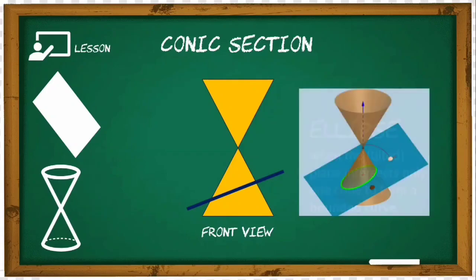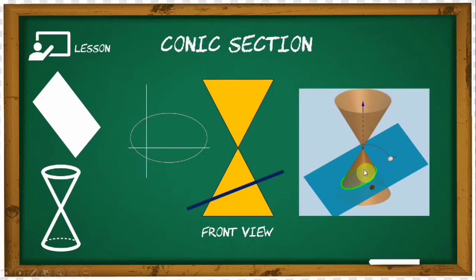In our 3D perspective for the ellipse, you can see the plane is tilted slightly to form a bounded curve. This is what we call the ellipse. On the x and y plane graph, it looks like a circle that has been stretched out.